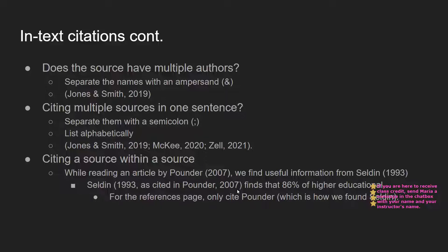Here's what to do if your source has multiple authors. If the one source you're using has more than one author, separate the names with an ampersand — that little 'and' symbol. For example: (Jones & Smith, 2019). We've still got the comma and the year, just with the two authors joined by the ampersand. Last names, comma, year.